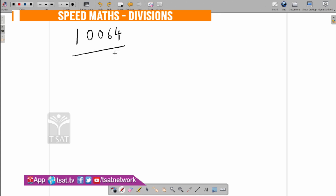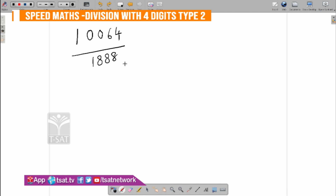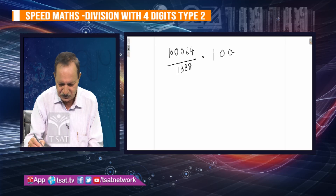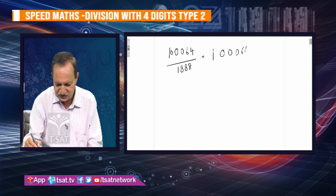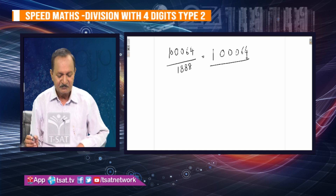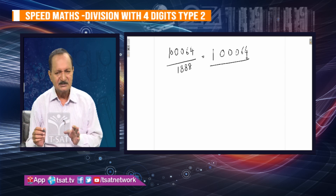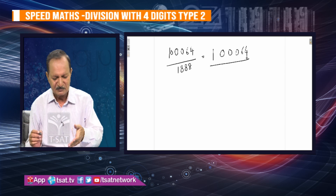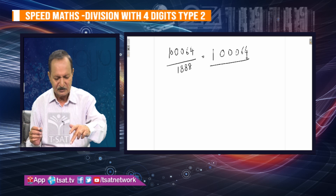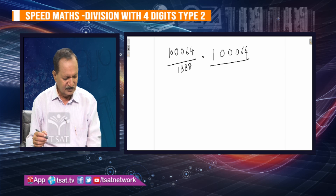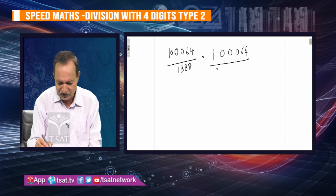10064 divided by 1888. Now I will show you. 1, 0, 0, 6, 4 divided by — I will show you how to do this conversion. So, if we get a number of numbers, we can use 2.10, the same number of numbers.